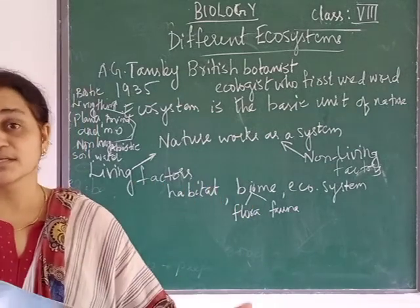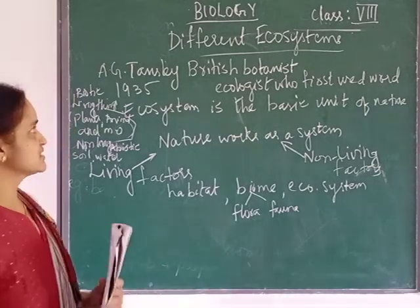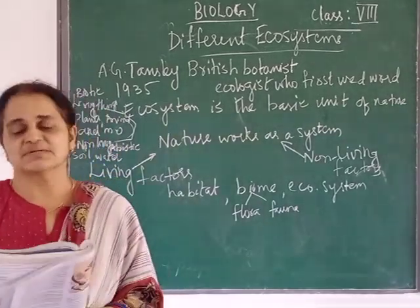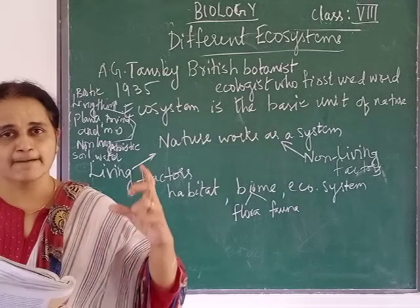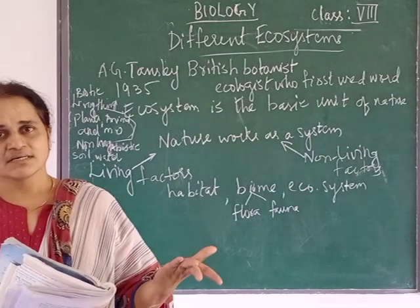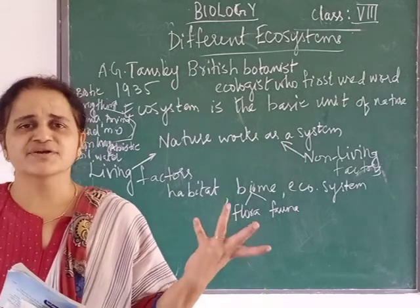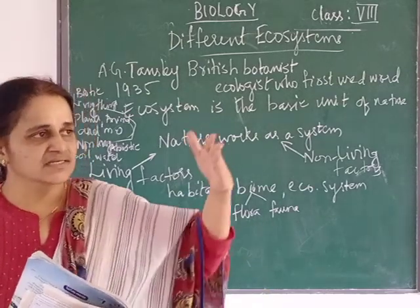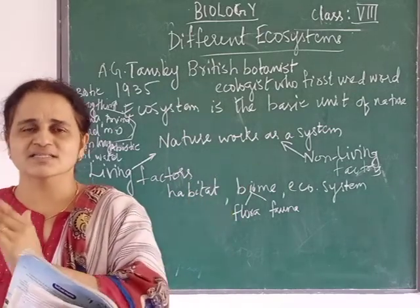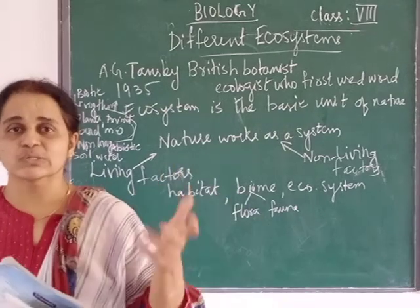Today we are going to begin a new unit, a new chapter. The name of the chapter is 'Different Ecosystems.' When I say ecosystem, take the example of a forest — in a forest there is a wide variety, a wide range of different animals, like tigers, rabbits, and foxes. All these are the wide range of animals found in the forest ecosystem.